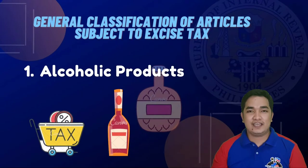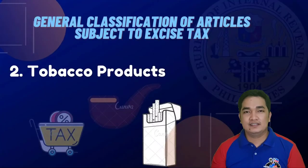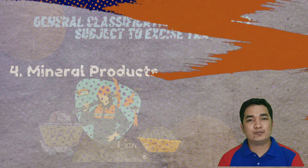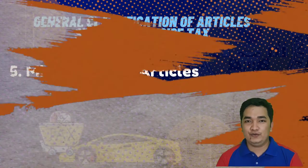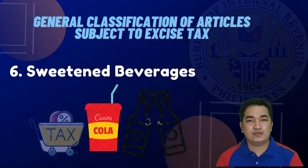We have the general classifications of articles subject to excise tax. First, we have alcoholic products such as distilled spirits or wines. Then we have tobacco products such as cigars or cigarettes. Third, we have petroleum products. Fourth, mineral products such as metallic and non-metallic. Fifth, we have miscellaneous articles such as vehicles, non-essential services, and sweetened beverages.